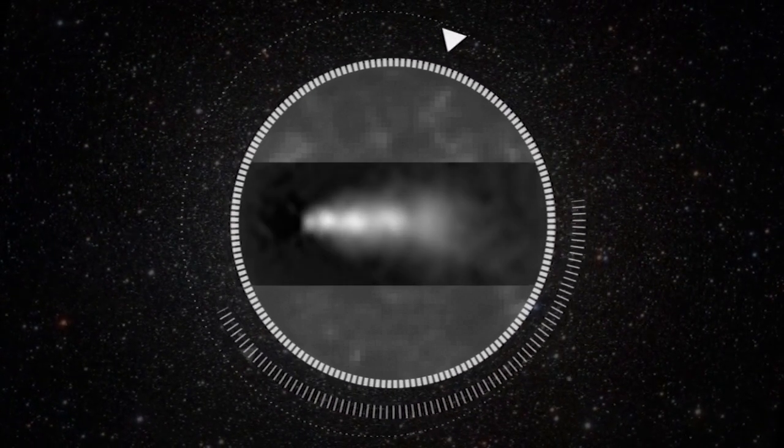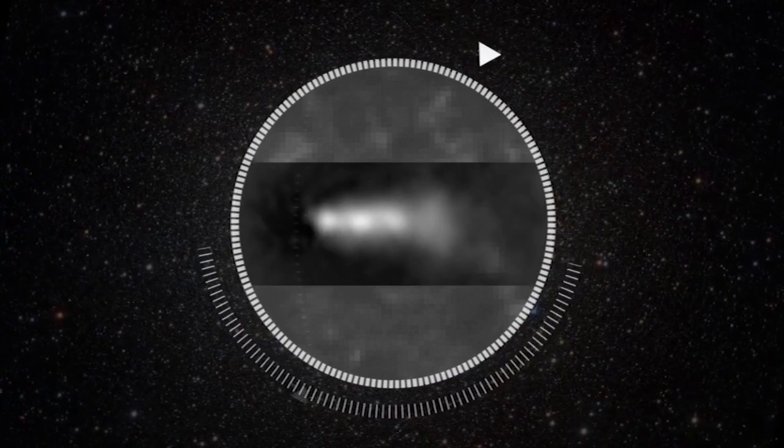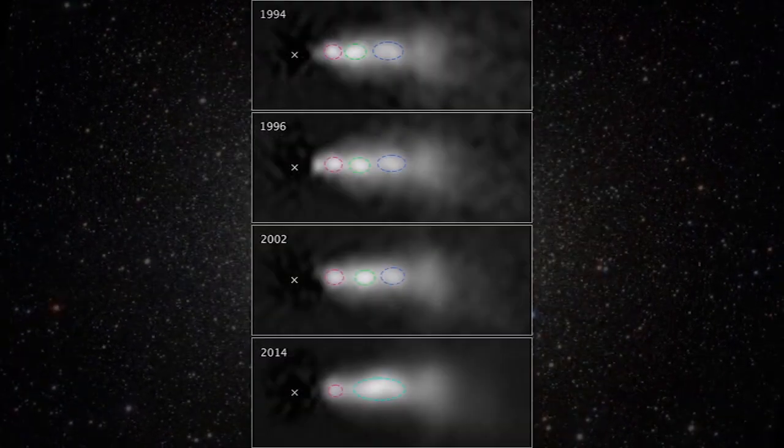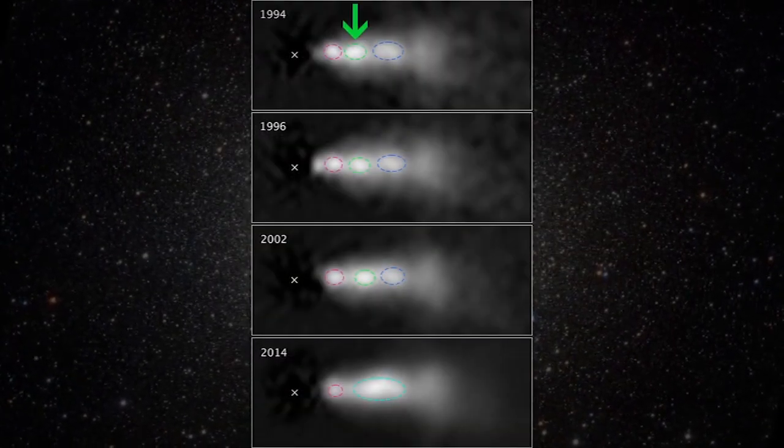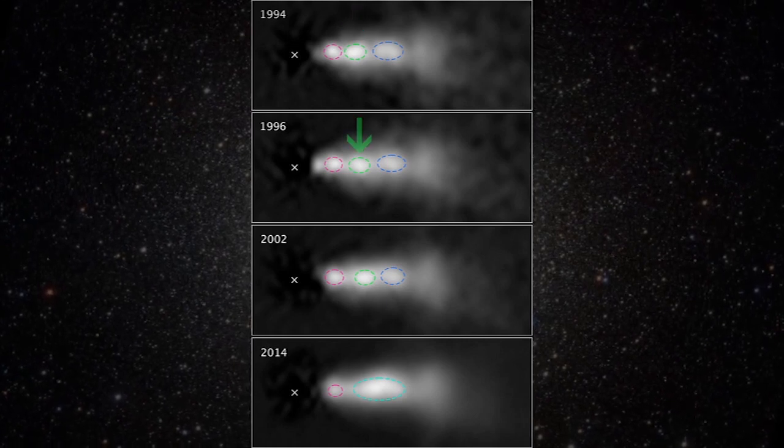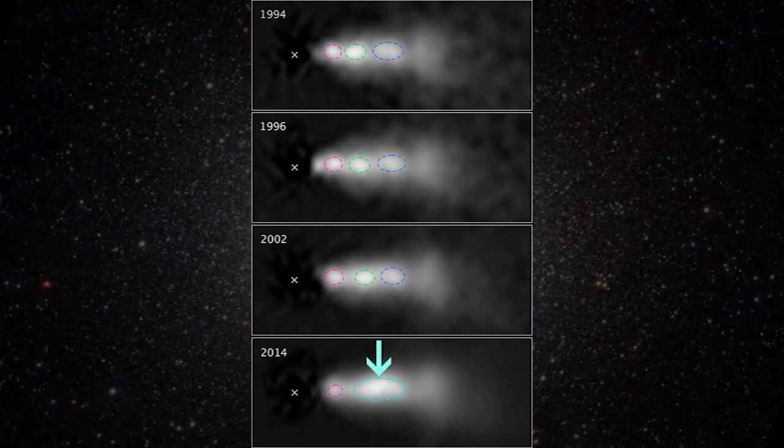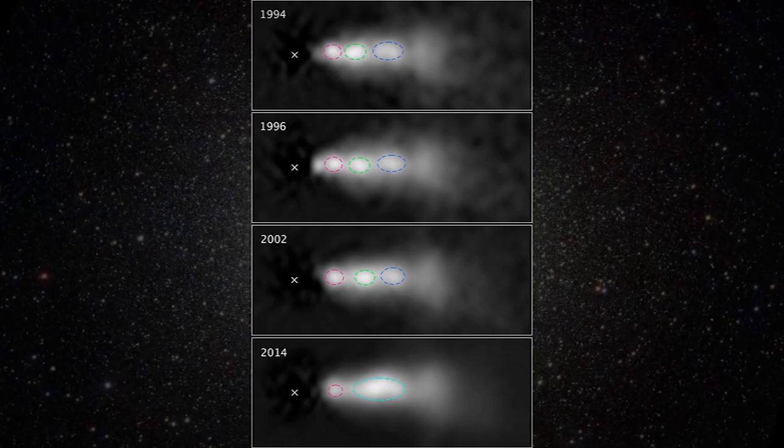Hubble's visual clarity, plus stability over time, has allowed astronomers to track the blobs in the jet. As you can see, over the years, the blob outlined in green has caught up with and merged into the one outlined in blue. It's a rear-end collision on a galactic scale.